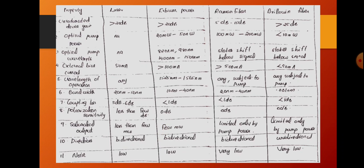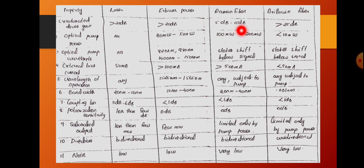From this performance comparison you can conclude that Brillouin fiber provides the highest gain — above 25 dB — but its bandwidth is very small at 0.001 nm. In the case of Raman fiber, the gain is 5 dB to 15 dB, which is lesser than that of erbium fiber. Erbium fiber provides a higher gain greater than 20 dB — as explained in the erbium-doped fiber amplifier videos, its gain can be up to 30 dB. That's all about this performance comparison.